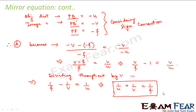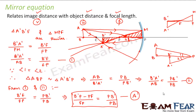So we derived the mirror equation by considering a concave mirror. Now we will see how the mirror equation applies in the case of a convex mirror — whether it remains the same or changes.